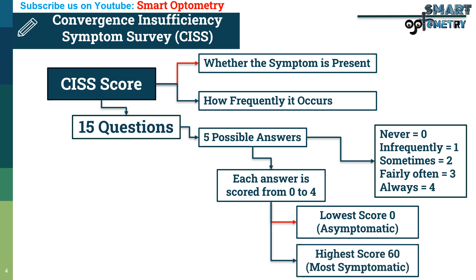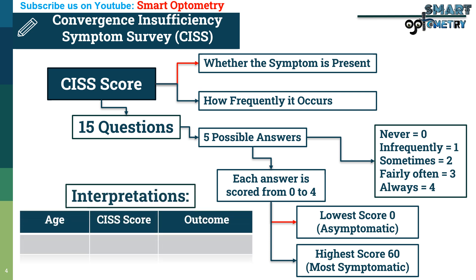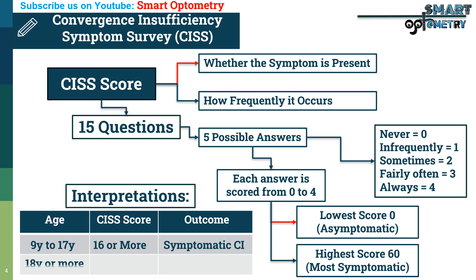For children aged 9 to 17 years, a symptom score of 16 or higher on the CISS has been found to differentiate those with symptomatic convergence insufficiency from those with normal binocular vision. For adults aged 18 and older, a symptom score of 21 or higher on the CISS has been found to be significant.